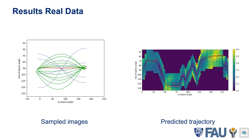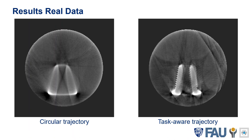The left image shows the acquired circular trajectories on the real data, where the red line indicates the classical trajectory, and all the other trajectories are taken to acquire images around the sphere. The right image then shows the recommended trajectory by our algorithm. Using this recommended trajectory, we get the following reconstructions. On the left side, again, the circular trajectory; on the right side, the task-aware trajectory. One can see that by using the task-aware trajectory, more details of the screw become visible, but also the soft tissue contrast increases.